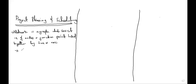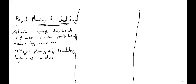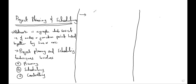We also mentioned that project planning and scheduling is meant to do three things. What are those three things? Planning, scheduling, and controlling. So project planning and scheduling techniques involve: A — planning, B — scheduling, and C — controlling. We also talked about the applications: road construction, events — to plan events — relocation, construction, et cetera.